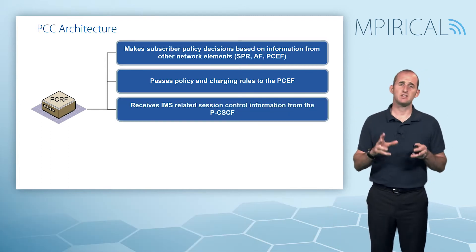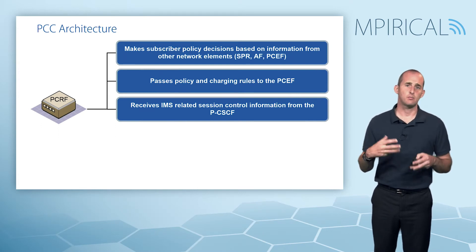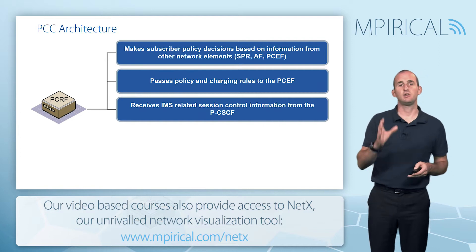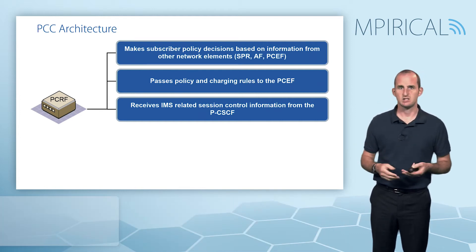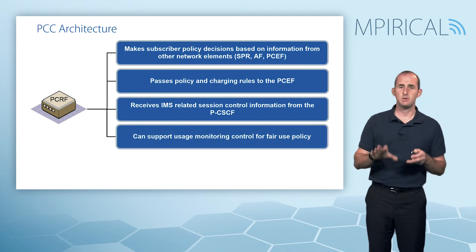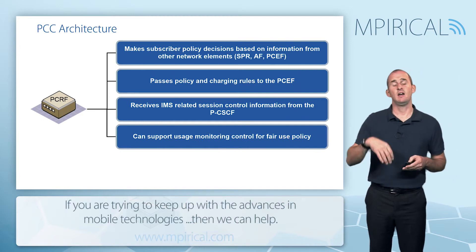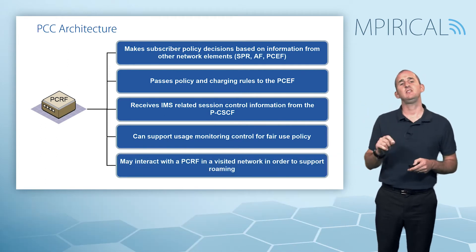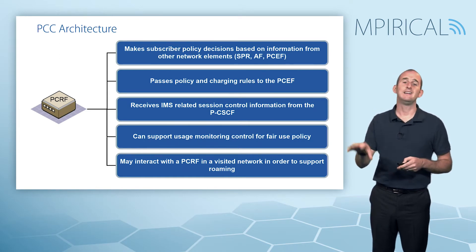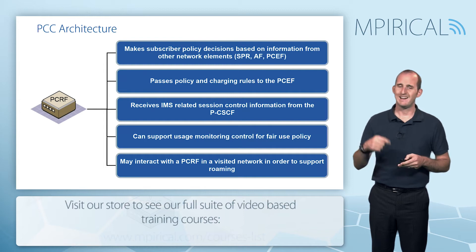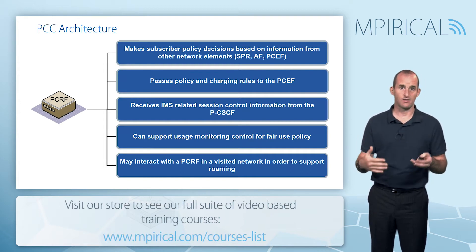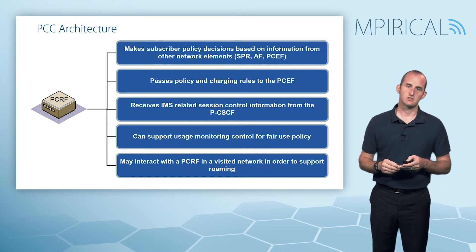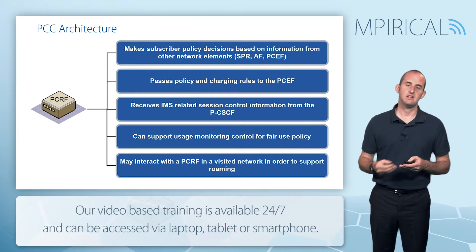The PCRF also receives IMS-related information from a proxy call session control function acting as an application function. This information is passed over the Rx interface during an IMS session establishment procedure. It's also possible for the PCRF to support usage monitoring in order to enforce any fair use policies in the network. Also, in a roaming scenario, you may see interaction between PCRFs from a home and a visited network, where the terms home PCRF and visited PCRF are used. Fundamentally, the PCRF makes its policy decisions, creates rules, and sends them to the PCEF for enforcement.